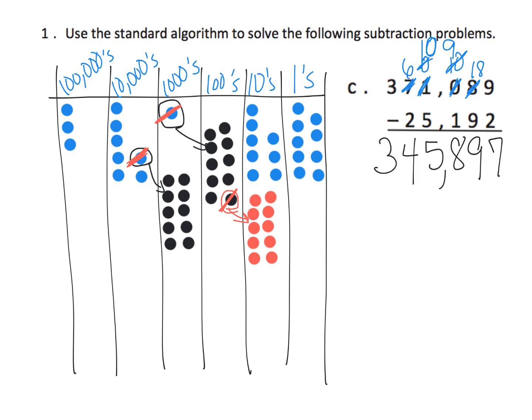Teachers, notice I kind of slipped into some shorthand language — instead of talking about units and place value, I just started saying six take away two, or nine take away one. Be careful with that. Your students have to be ready for that kind of shorthand. If we're doing nine take away one, we really need to be saying nine hundreds take away one hundred.